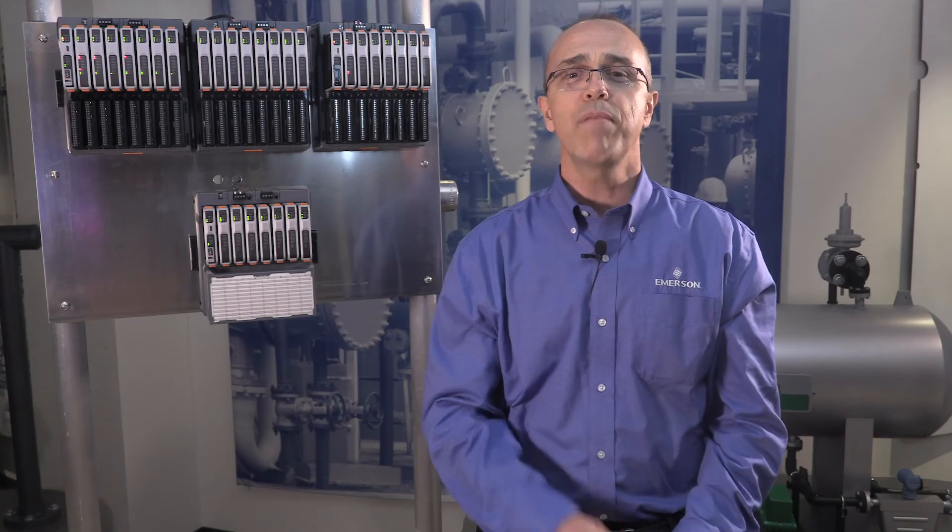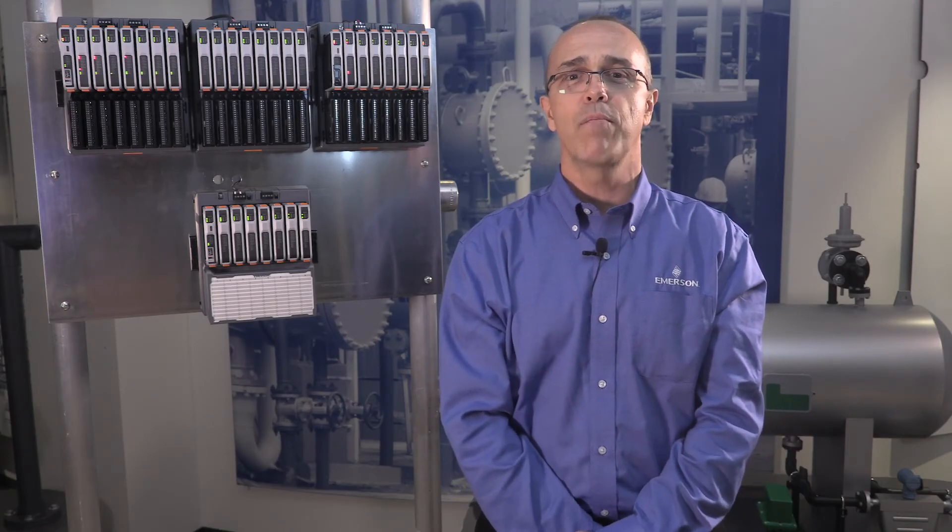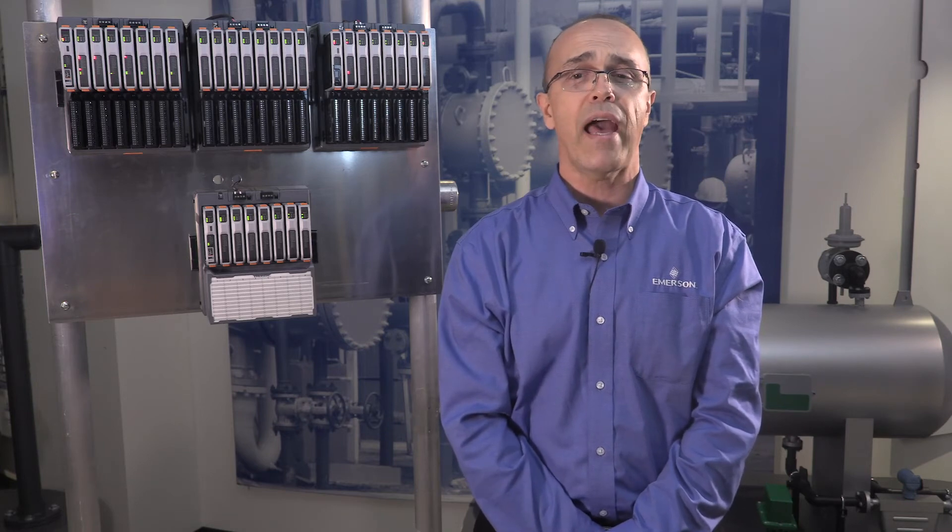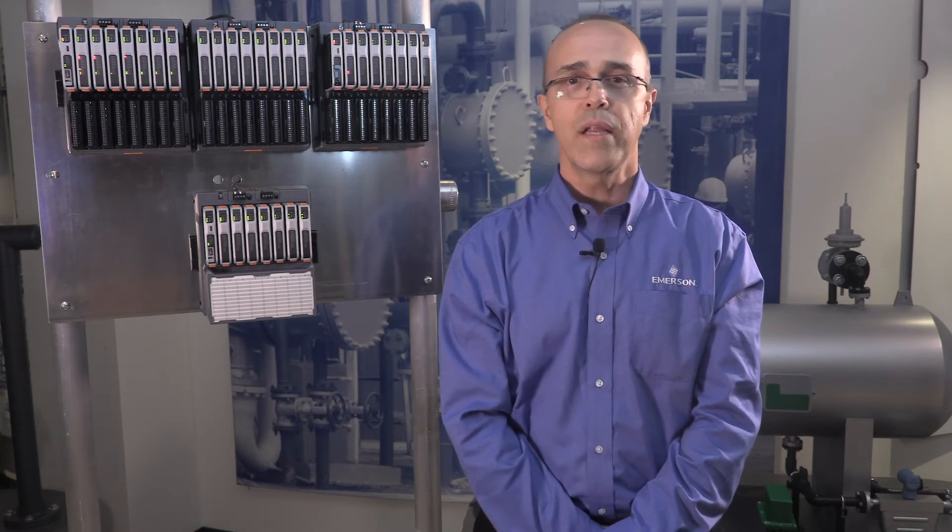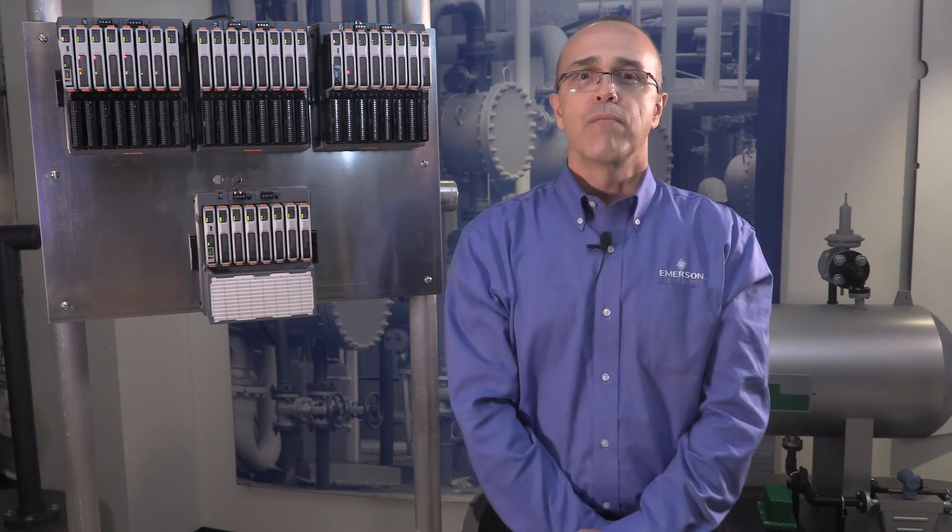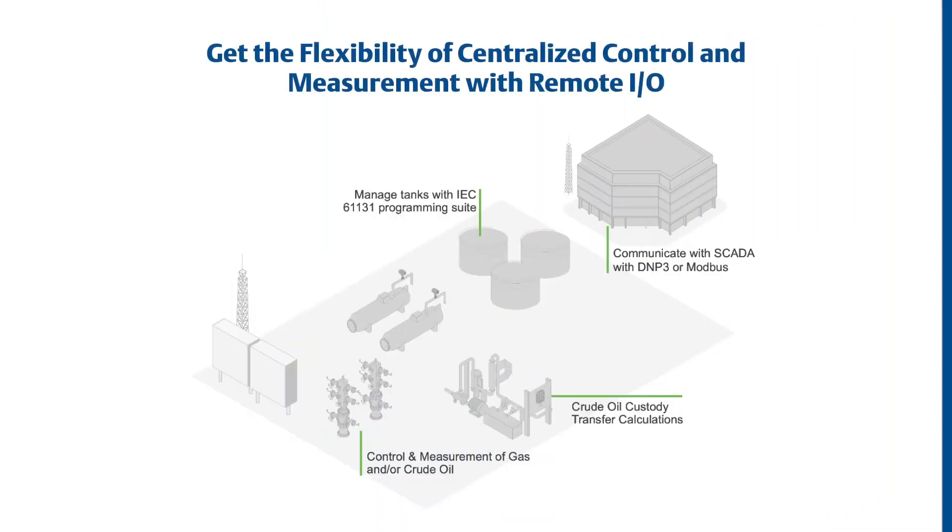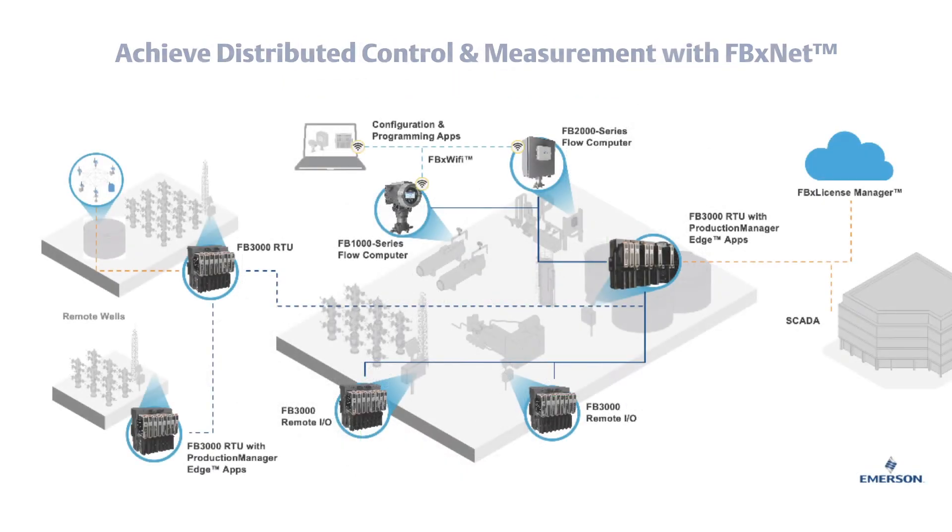Just one FB3000RTU can expand to provide both pad control and measurement for up to 36 meter runs of gas, liquids, or both. Do you need more capacity? No problem. You can have the flexibility of either centralized control and measurement with remote I-O or distributed control and measurement across large multi-well pad architectures using our integrated peer-to-peer network, FBXNet.